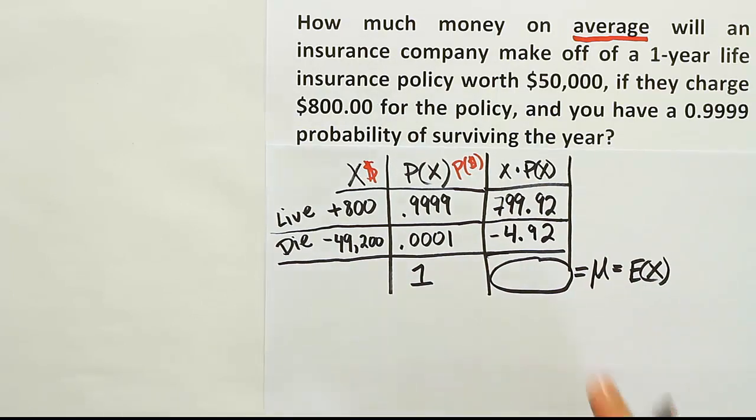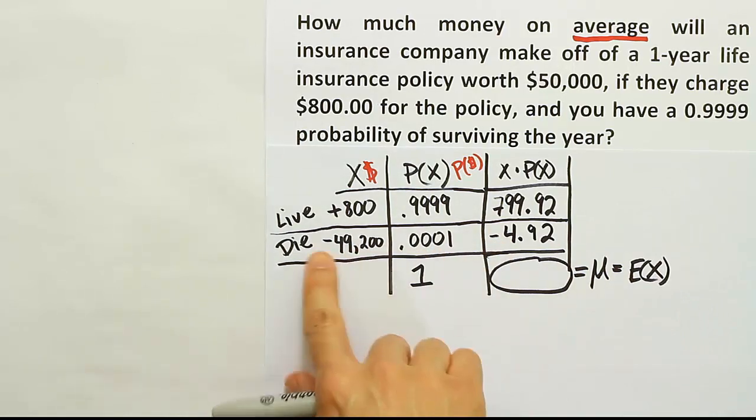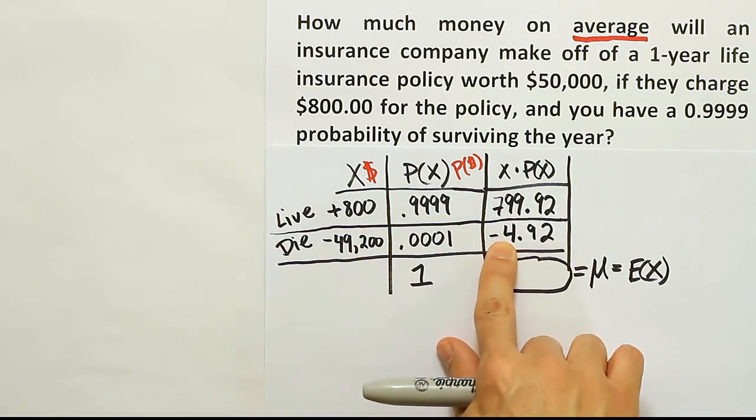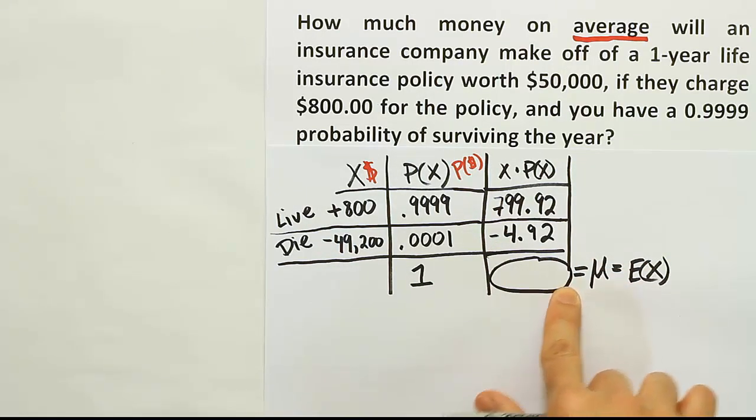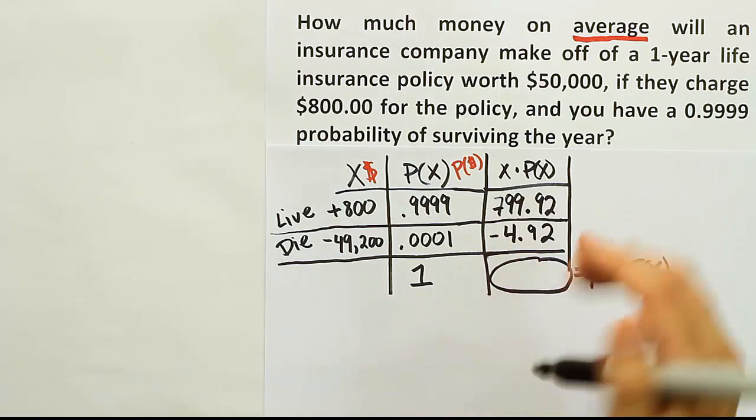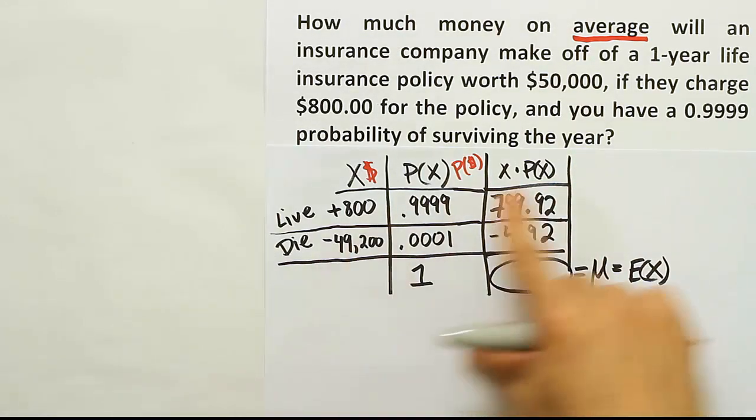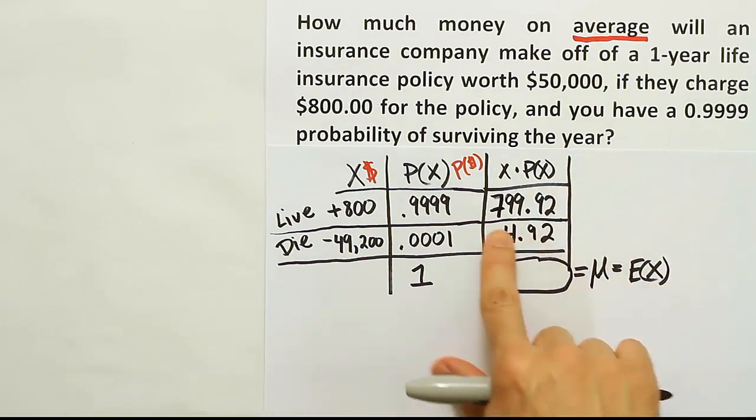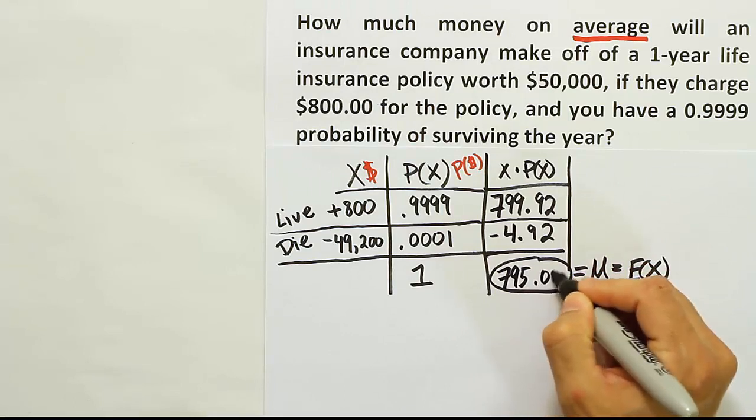Or you can just multiply it in your calculator and get the same exact answer. One thing I want to emphasize that you have to be really careful of is to make sure you bring over that negative sign. First of all, make sure you put it in the first place, but then make sure you carry it over because a lot of times that's the mistake that people make and they don't get the right answer down here as a result. So it's the most common error to be made, which is to forget to put the negative sign when there's a loss. Okay, so you subtract these two values and, of course, you'll get 795.00.